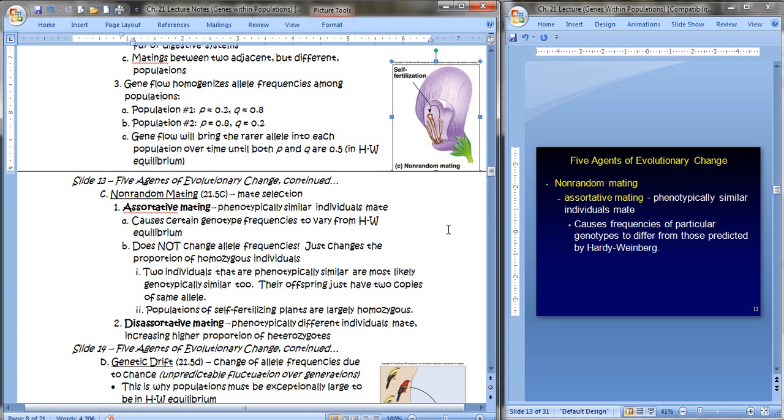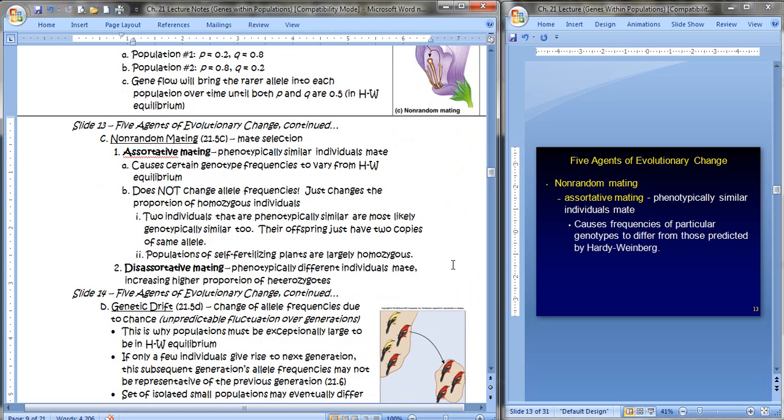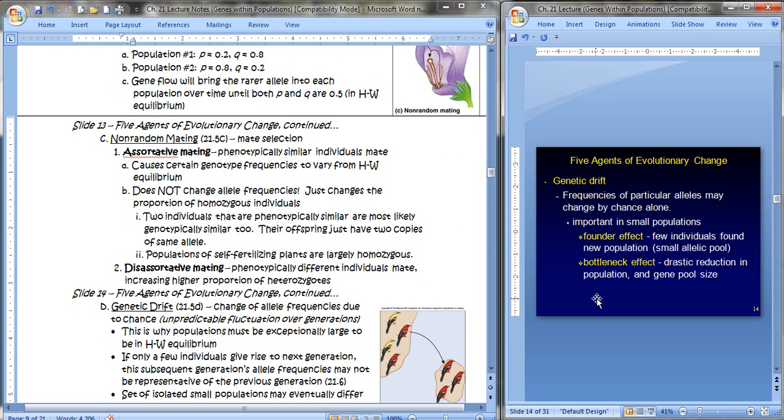So that would make maybe more of the population be homozygous, but it doesn't change the actual frequencies. Two individuals that are phenotypically similar are most likely genotypically similar too. Their offspring just have two copies of the same allele. For example, self-fertilizing plants, which is what this picture is all about, are largely homozygous because they're self-fertilizing. Disassortative mating is where phenotypically different individuals mate, and this would actually increase to a higher proportion of heterozygotes.